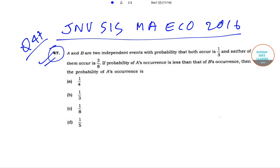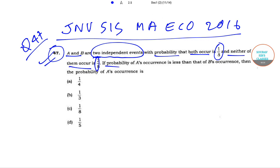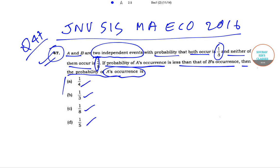In question number 47, it has been said that A and B are two independent events with probability that both occur is 1 by 8, and neither of them occur is 3 by 8. If the probability of A's occurrence is less than that of B's occurrence, then the probability of A's occurrence is: 1 by 4, 1 by 3, 1 by 8, and 1 by 5. So these are the four options.